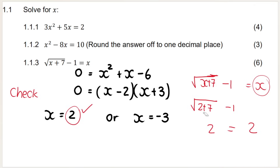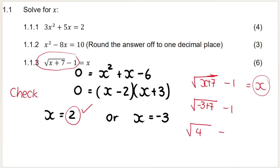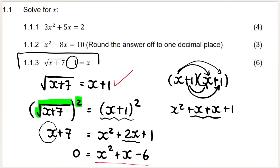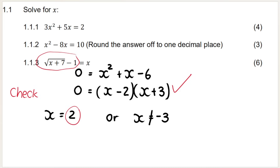Now let's try the other solution: put negative 3 in place of x. You get the square root of negative 3 plus 7, minus 1 — that's the square root of 4 minus 1, which equals 2 minus 1 equals 1. But the right-hand side equals negative 3. Since 1 does not equal negative 3, this solution is not valid and you must draw a line through it. You get marks for: isolating the root, squaring both sides, standard form, factorizing, both answers, and rejecting the invalid solution.